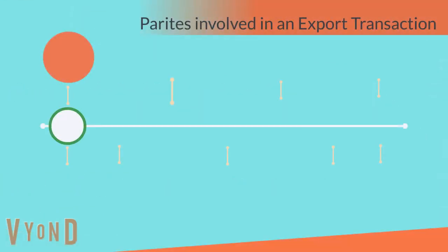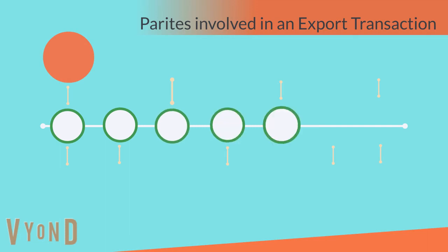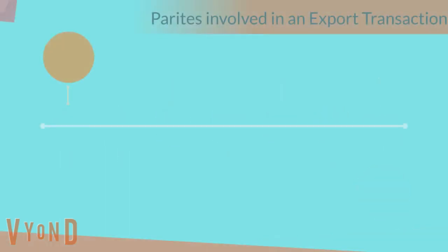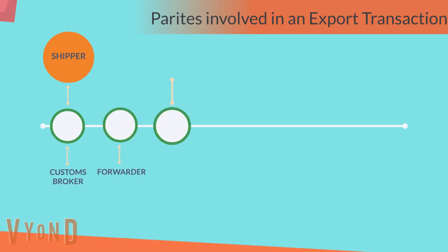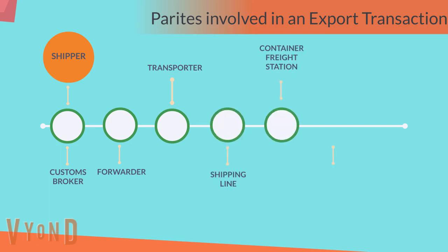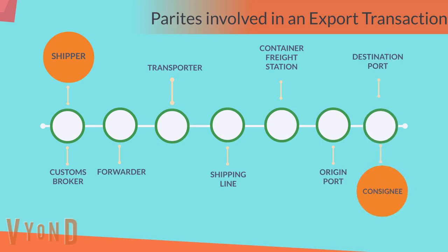Let us now have a look at the parties involved in an export transaction: Shipper, Customs Broker, Forwarder, Transporter, Shipping Line, Container Freight Station, Origin Port, Destination Port, and Consignee.